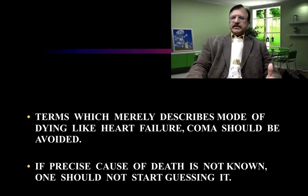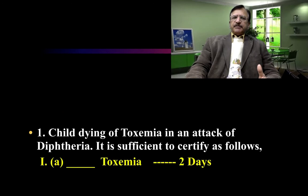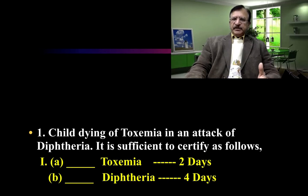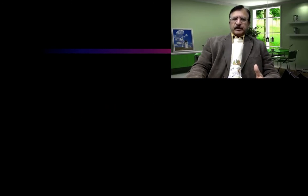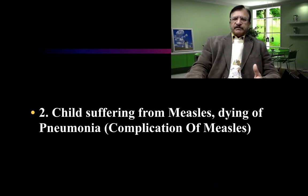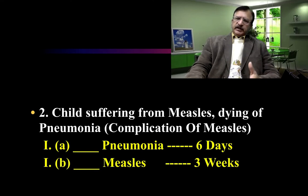If the precise cause of death is not known, one should not guess it. Another example: a child dying of toxemia in an attack of diphtheria — certify as 1A, toxemia for the last two days; and 1B, diphtheria for the last four days. Another case: a child suffering from measles who died of pneumonia as a complication — 1A, pneumonia for the last six days; 1B, measles for the last three weeks.